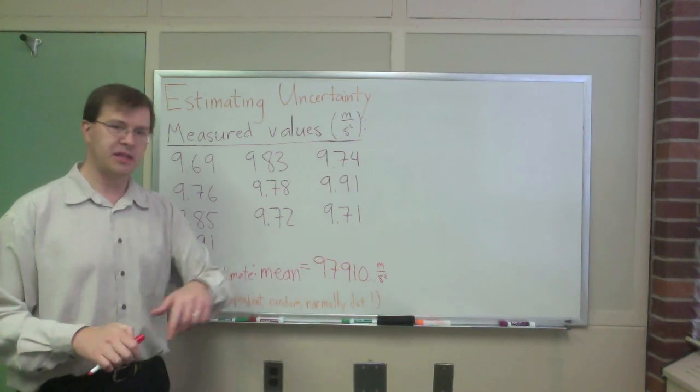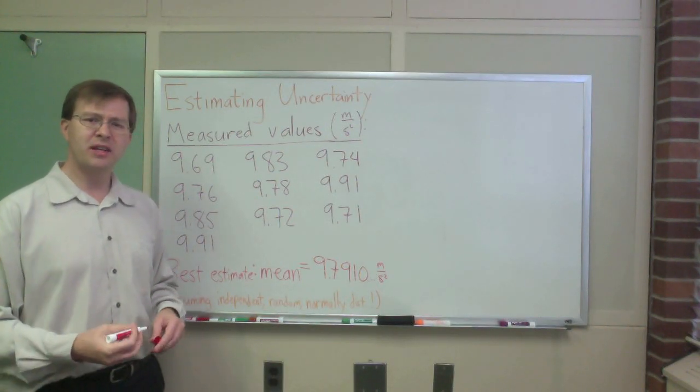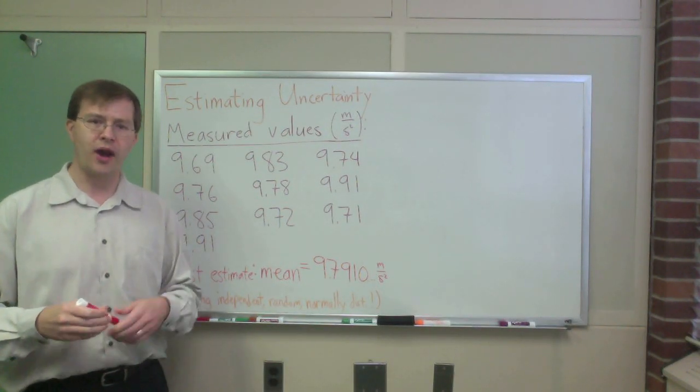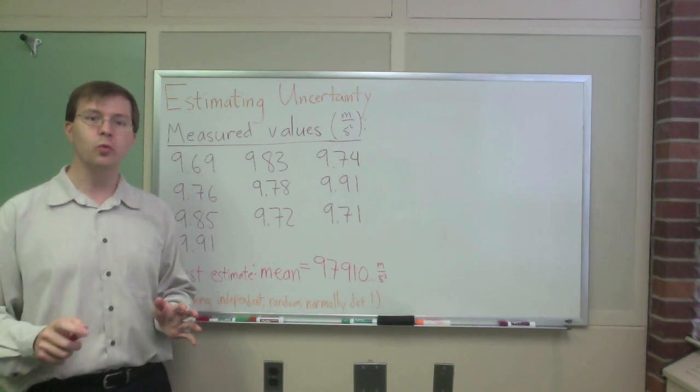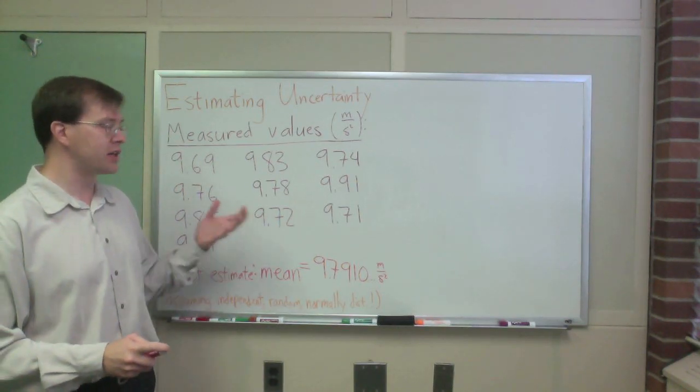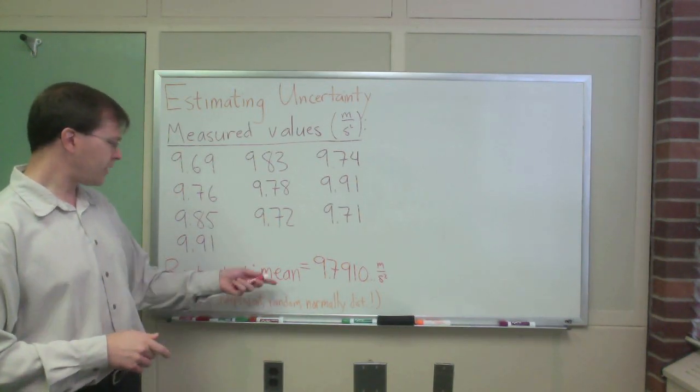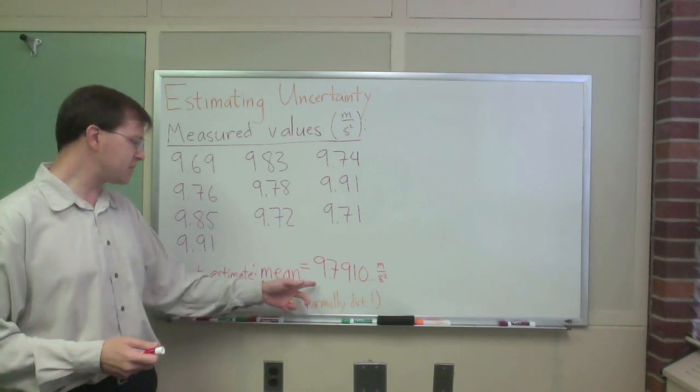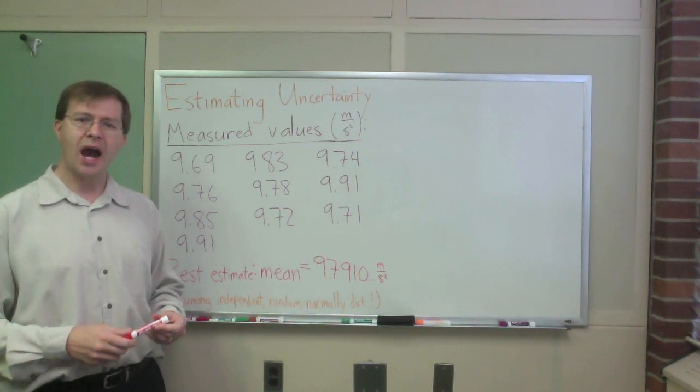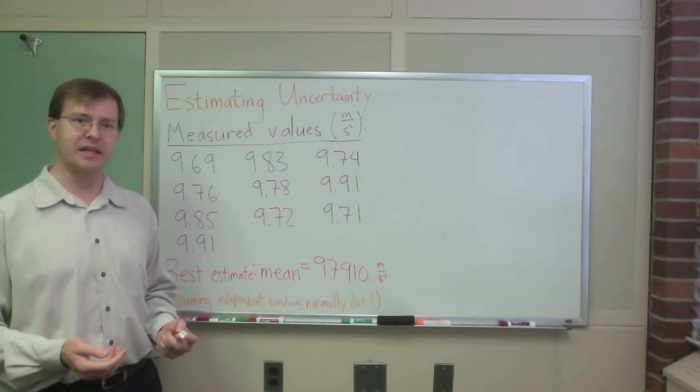Obviously, I could keep as many digits as I wanted there, but there's a question, there's rules out there for how many digits do I keep. Those are silly rules. We're going to learn the real way to do this using uncertainties. So that's the mean. That's my best estimate for the gravitational field strength here. How do I estimate my confidence in this?